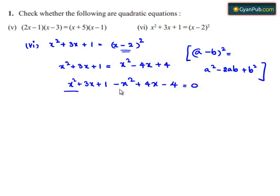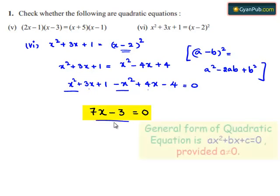So plus x square and minus x square will be cancelled. 3x and plus 4x becomes 7x, plus 1 and minus 4 becomes minus 3. So 7x minus 3 is equal to 0 is the equation obtained.